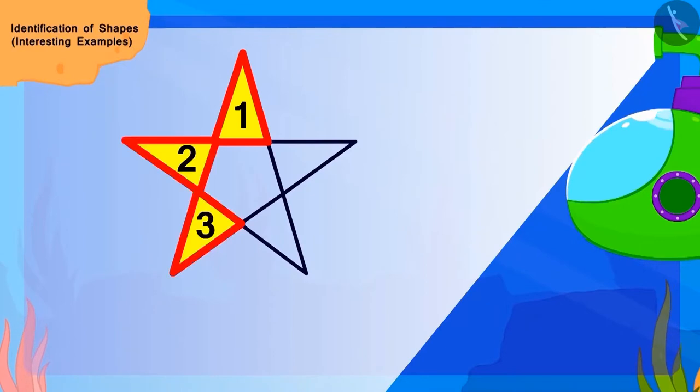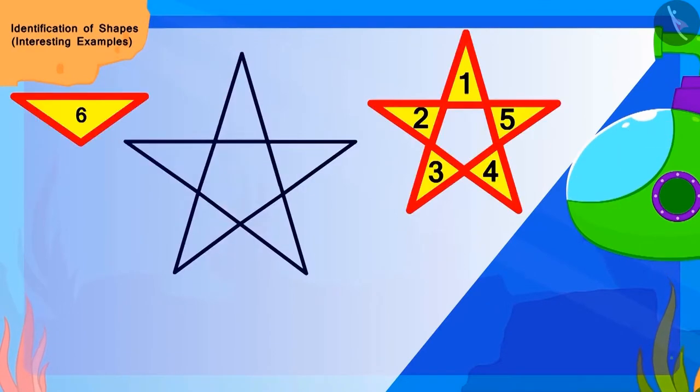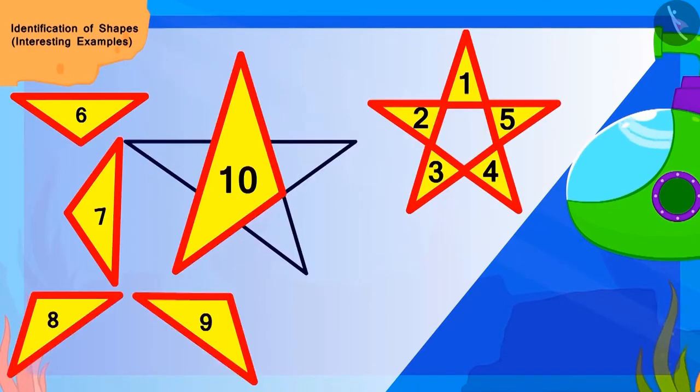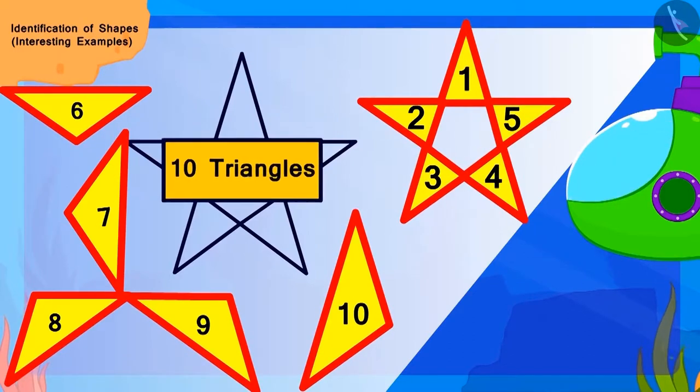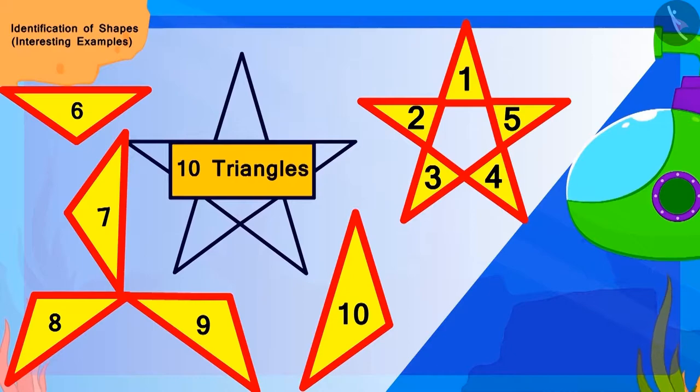Children, to find out how many triangles are there in this pattern made on the box, we will find out this way. Yes, there are a total of ten triangles here.